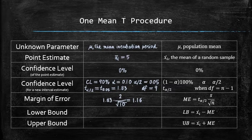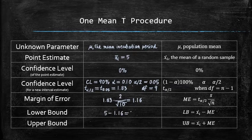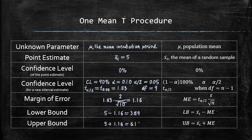And to find the lower bound, we subtract 1.16 from 5 to get 3.84. And to obtain the upper bound, we add 1.16 to 5 to get 6.16.